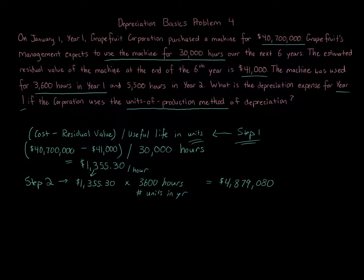The machine is expected to have a life of six years, and once you reach 30,000 hours you stop depreciating. If those 30,000 hours are reached before Year Six, you stop early. If the machine lasts longer than six years, in Year Six you simply take whatever depreciation remains — the six years acts as a ceiling, but the focus is really on the 30,000-hour total.